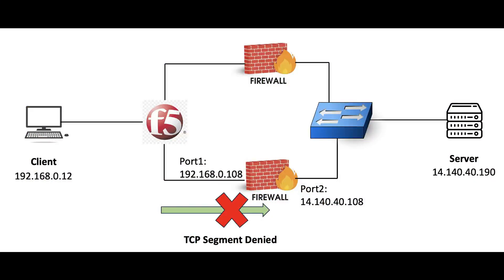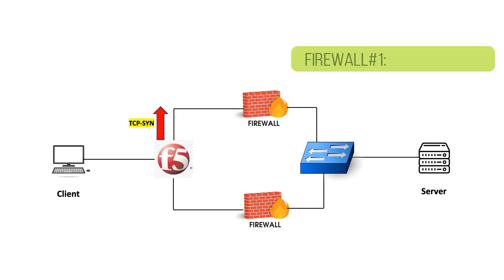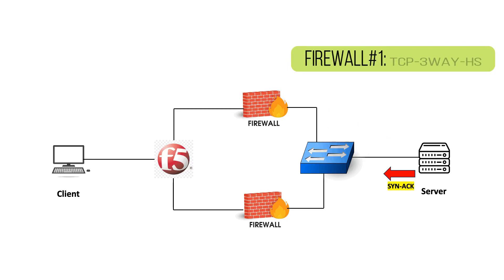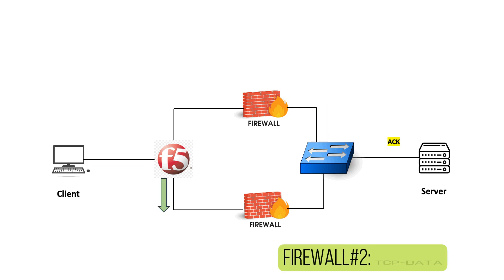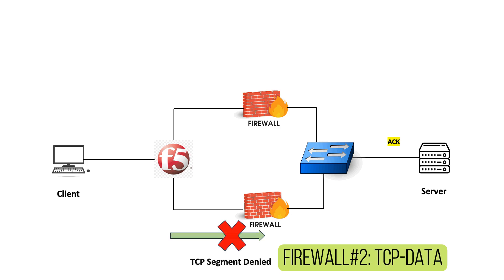Consider a scenario where the TCP three-way handshake and the TCP data are flowing through two different networking paths. Because of some configuration on the load balancer, the TCP three-way handshake is being diverted to firewall 1, and the subsequent TCP data traffic is being forwarded to firewall 2. Since the TCP three-way handshake did not happen through firewall 2, the data traffic is getting dropped on firewall 2.